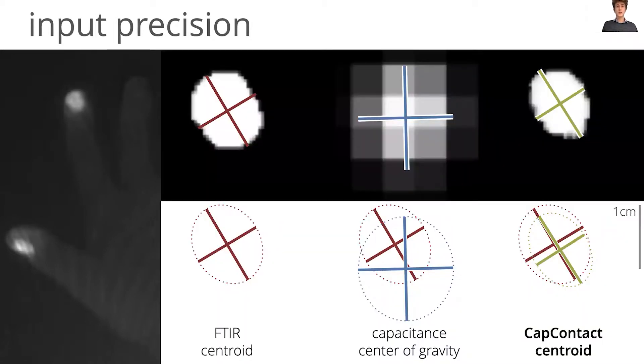As a side effect of reconstructing contact areas, the touch input locations we can derive from CapContact are much closer to the true contact center than the center of gravity of the capacitive measurements. For full details, please see the paper.